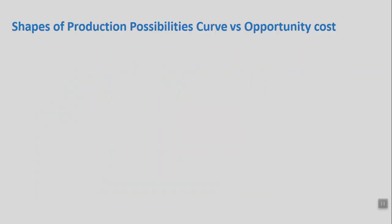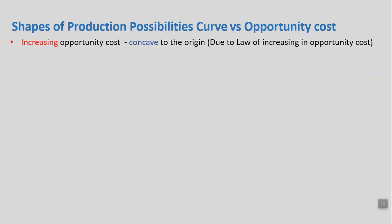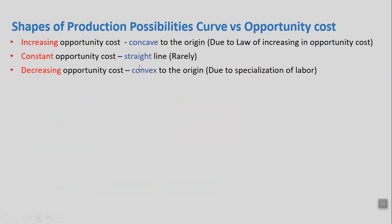Hello everyone, this is Fahim Ahmed with our third lecture. Today we are going to discuss the shapes of production possibilities curves against opportunity cost. There are three PPC curves possible: the first one is concave, the second one is straight line, and the third one is convex to the origin.